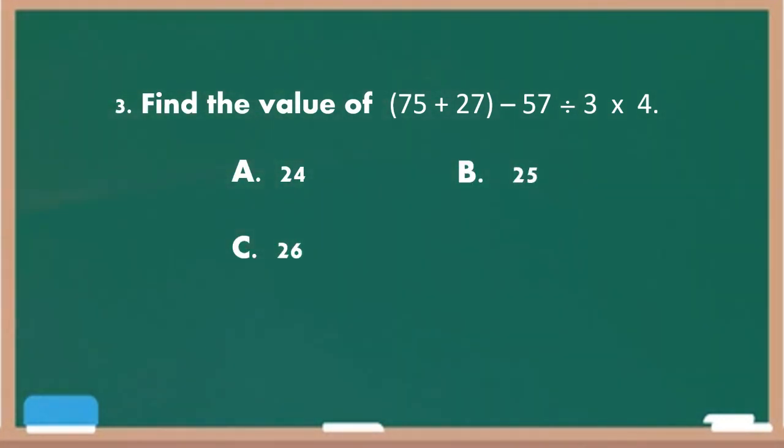Next, number 3. Find the value of parenthesis 75 plus 27 minus 57 divided by 3 times 4. Letter A, 24. Letter B, 25. Letter C, 26. And letter D, 27. Go! Times up. The correct answer is letter C.